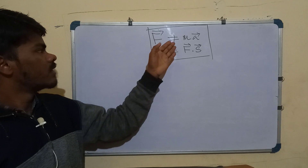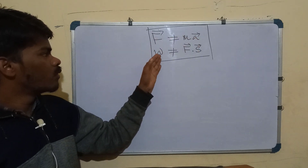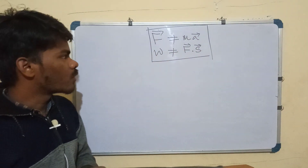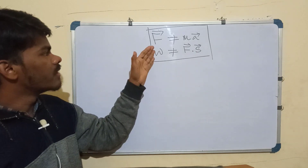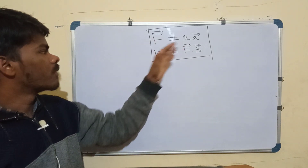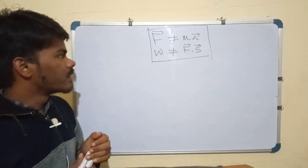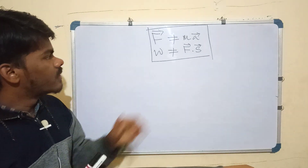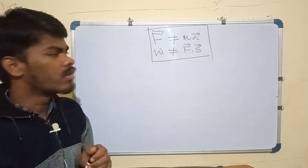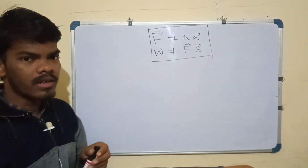F is not equal to ma, and W is not equal to F dot s. We all know that F equals ma and W equals F dot s, but these two are not the very basic formulas to find out work done and force. So let's see what the very basic formulas are.